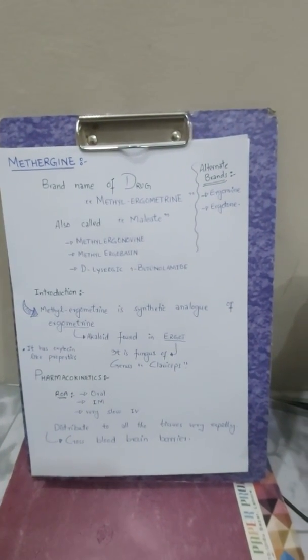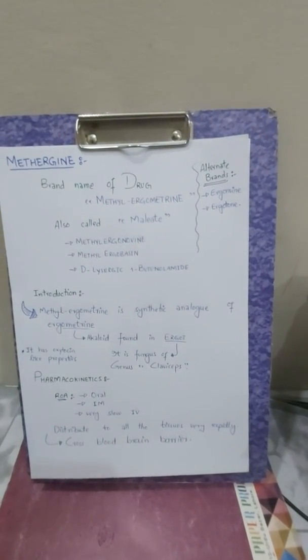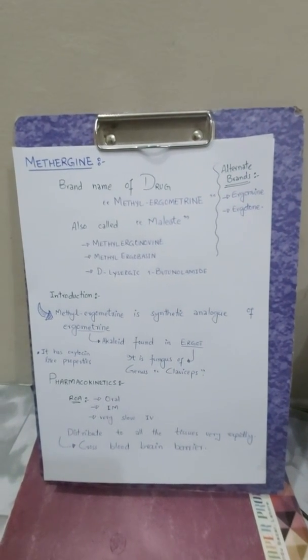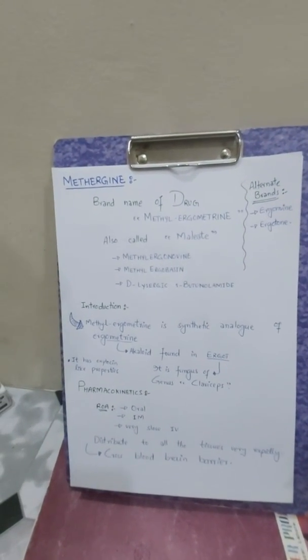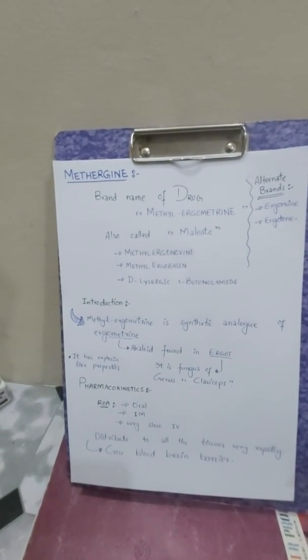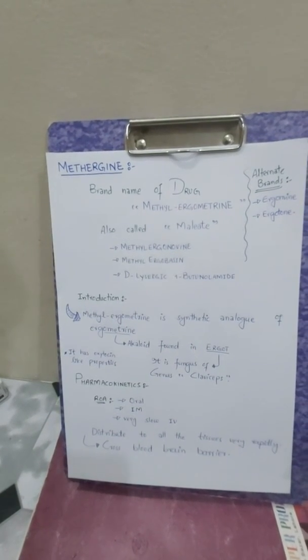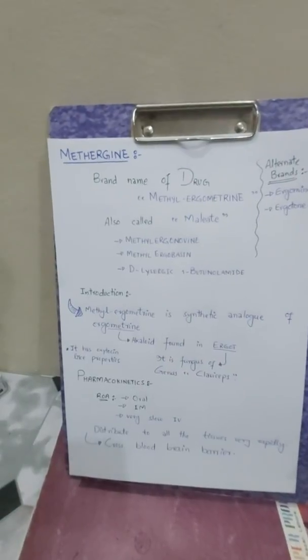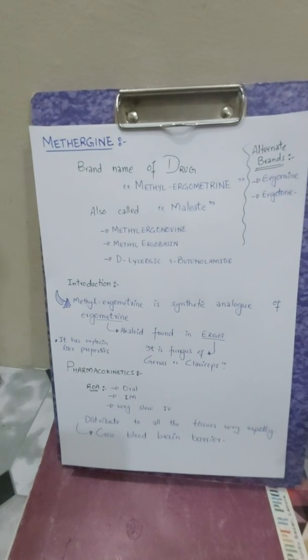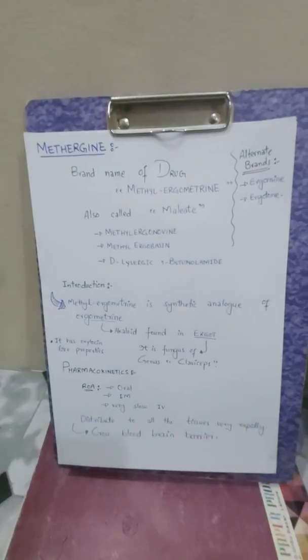Now a little introduction of the drug methylergometrine. Methylergometrine is a synthetic analog of ergotamine, an alkaloid found in ergot. Ergot is a fungus of the genus Claviceps. This drug methylergometrine has oxytocin-like properties because it has the same functions as oxytocin.